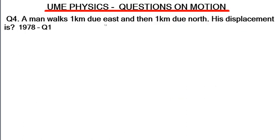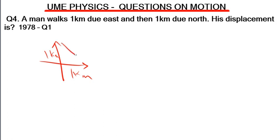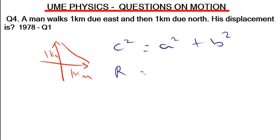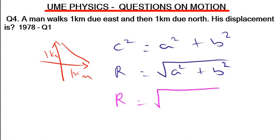Question four: a man walks 1 km due east and then 1 km due north — its displacement is? Using a map bearing, north is upward and east is to the right, so the man moves 1 km up and 1 km to the right. To find the resultant displacement, we use the Pythagorean theorem: c² = a² + b². Our resultant r = √(1² + 1²) = √2 km.